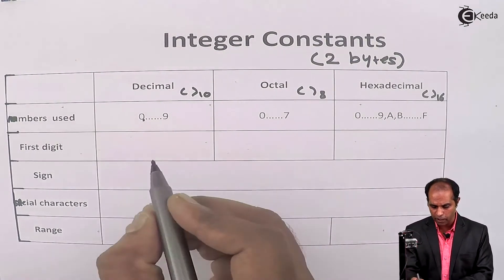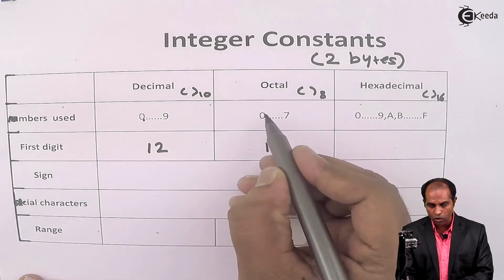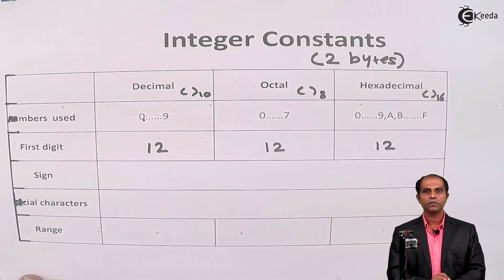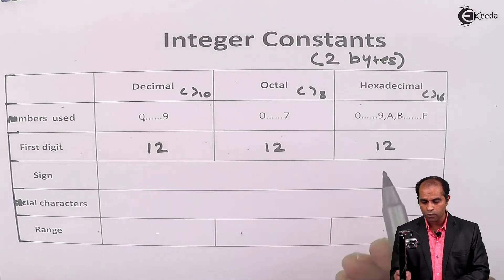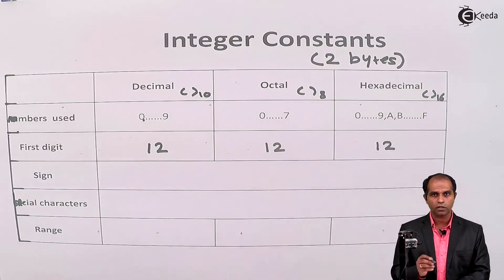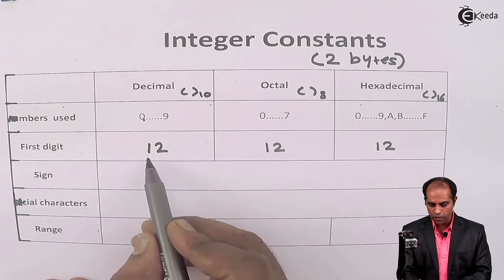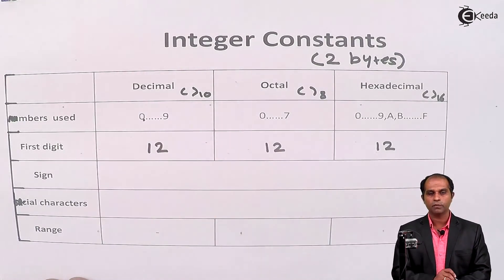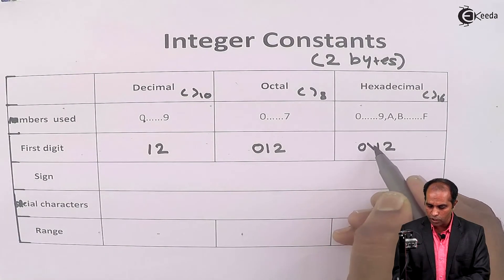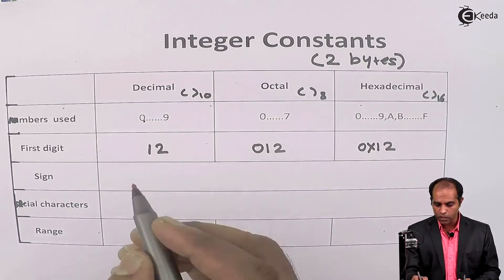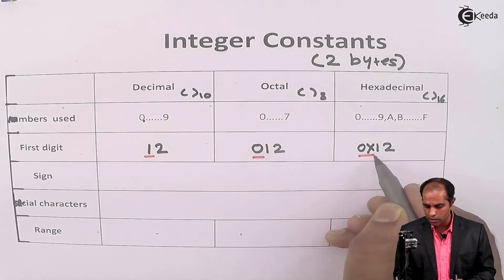How does C identify whether a number like 12 is decimal, octal, or hexadecimal? We use a rule called the first-digit rule. If the first digit is non-zero, it is identified as a decimal number. If I want to write 12 in octal, I use a first digit of 0, so it becomes 012. For hexadecimal, I write 0x at the beginning, like 0x12. So: non-zero first digit means decimal, first digit 0 means octal, and first digit 0x means hexadecimal.